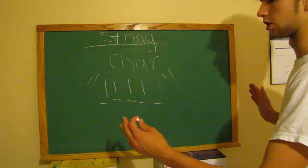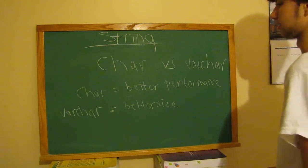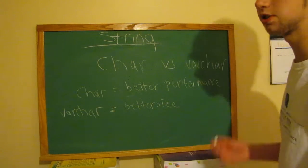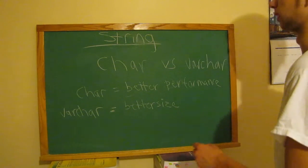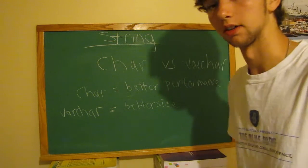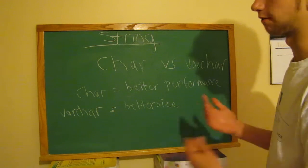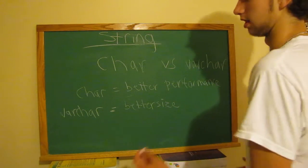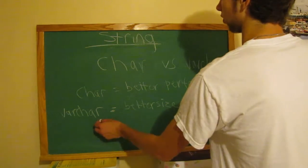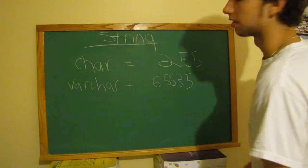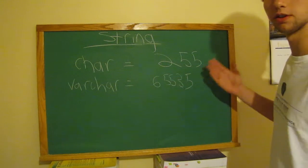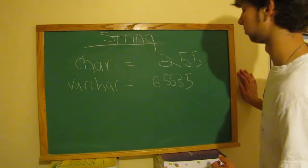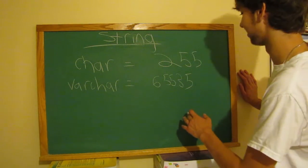Varchar varies in length, so here are the stats: char gives better performance, varchar gives better size. Use char for fixed-length fields like social security numbers and phone numbers. Use varchar for variable fields like names, usernames, and emails. The max you can store in char is 255 characters, versus varchar at 65,535.